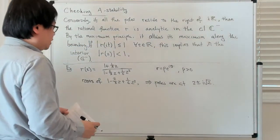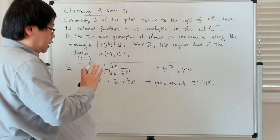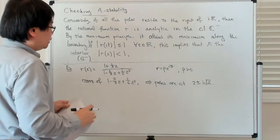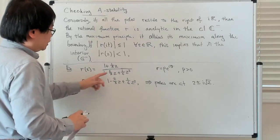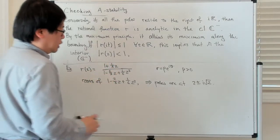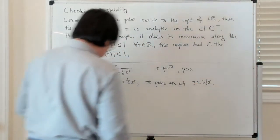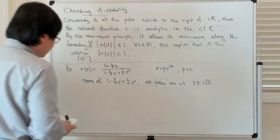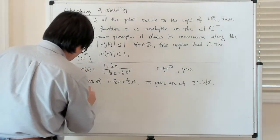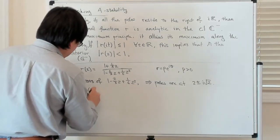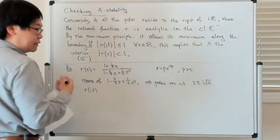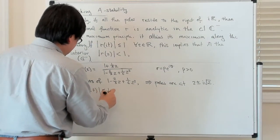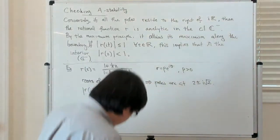So you look at the roots of 1 - 2z/3 + z²/6. You can check that the poles are at 2 ± i√2. So that means the poles are not in the closure of the left half plane. The condition you want to check is that all the poles have positive real parts — and they both do. Then the other condition you need to check for A-stability is that R evaluated on it, where t is a real number, has modulus less than or equal to 1.